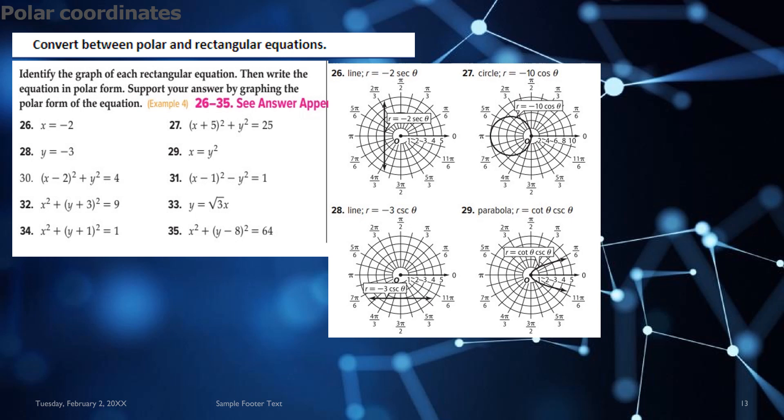For question 26 to 35, you have to do the graph on the rectangular equation and then write the equation in polar form. So the answer is given here in the form of the graph. You can use Desmos also for drawing the graph of the polar coordinates. And this is how the graph is going to look like.